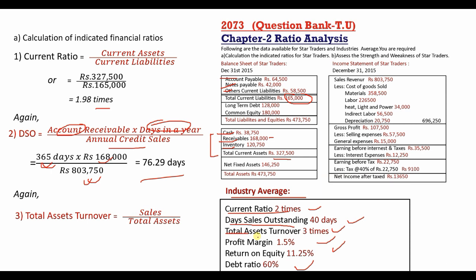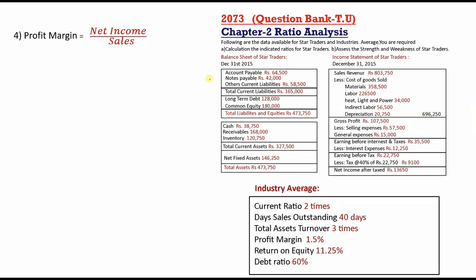Now the total assets turnover. Formula: sales divided by total assets. Total assets turnover = $8,37,500 divided by $4,73,750 = 1.77 times. Then we calculate profit margin.